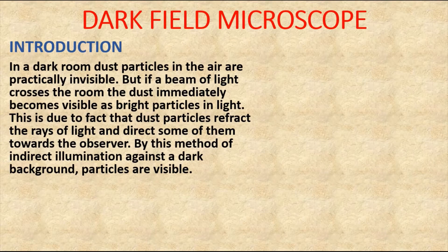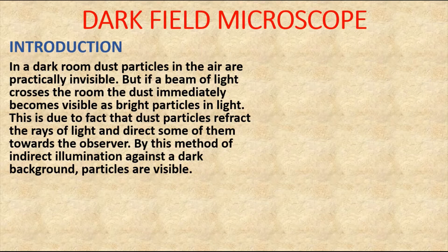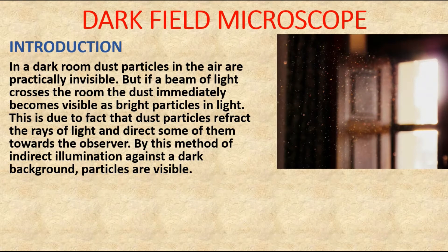When you enter into a dark room, dust particles in the air are practically invisible. But if a beam of light crosses the room, the dust immediately becomes visible as bright particles in the light. This happens because the dust particles refract the rays of light and direct some of them towards the observer. By this method of indirect illumination against a dark background, particles become visible.